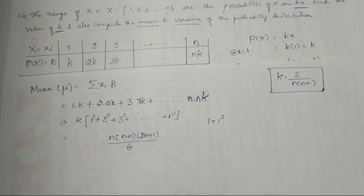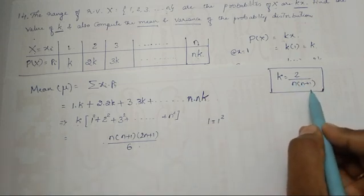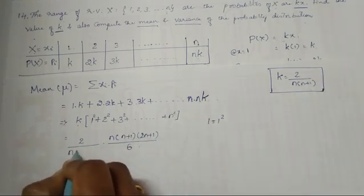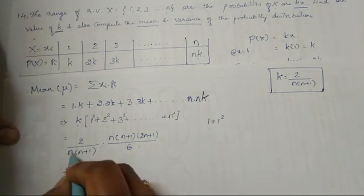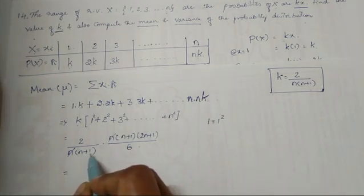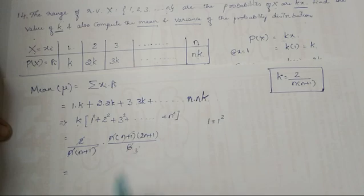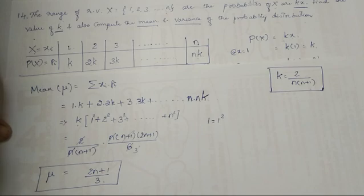Now substitute k = 2/[n(n+1)]. So mean = 2/[n(n+1)] × n(n+1)(2n+1)/6. Cancel the common terms: n cancels with n, (n+1) cancels with (n+1), 2 and 6 give a factor. The value of mean μ = (2n+1)/3.